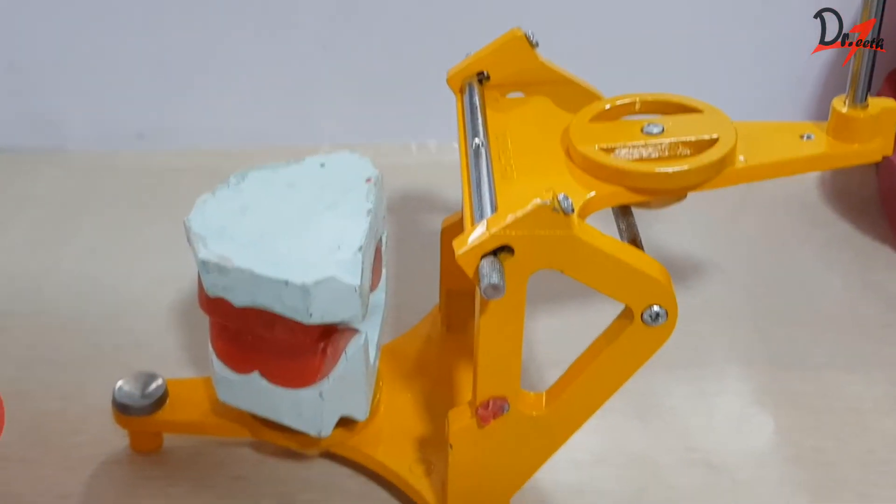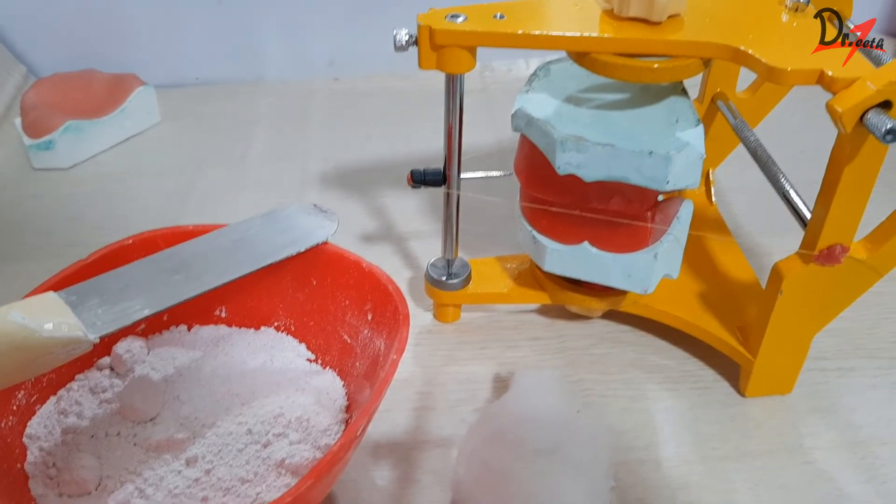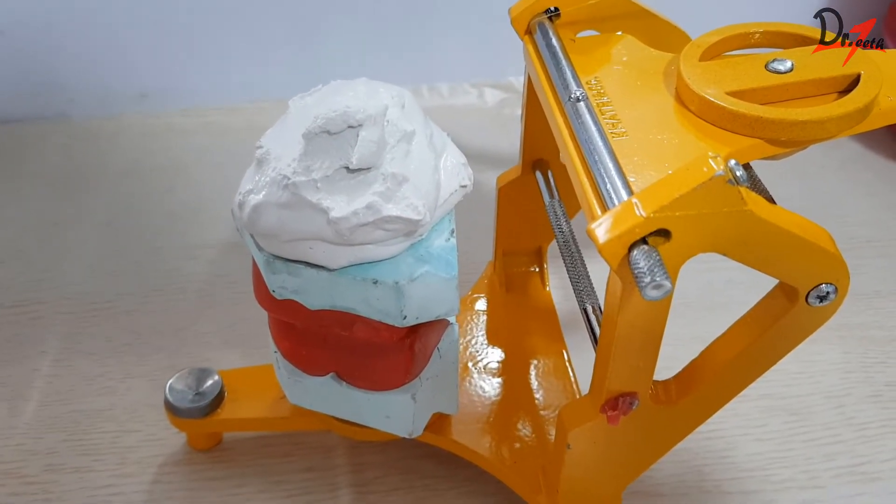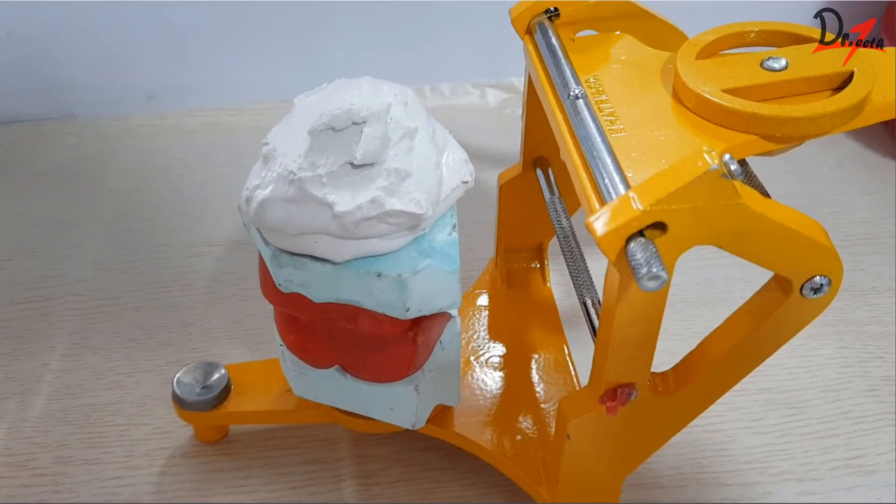Open the upper member and mix the plaster and put on the top of the upper cast. Make sure to put enough plaster so that when you close the upper member, the material should flow within the mounting rings. So, that will create retention.